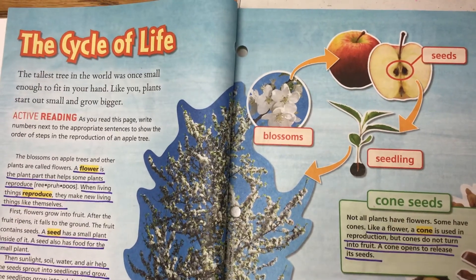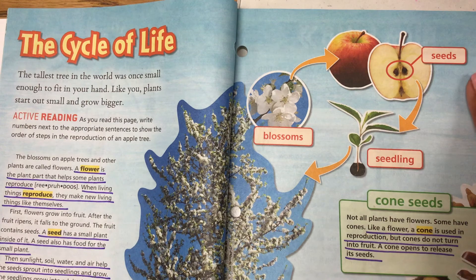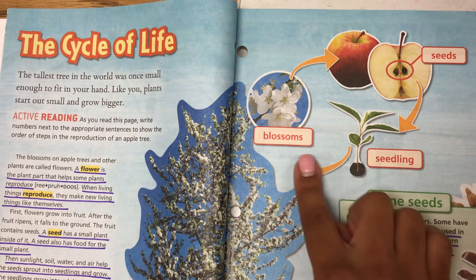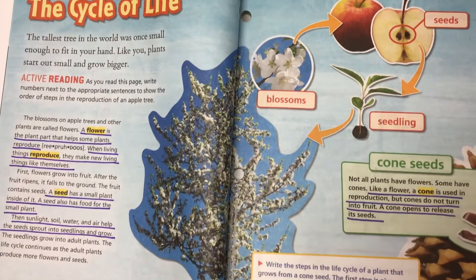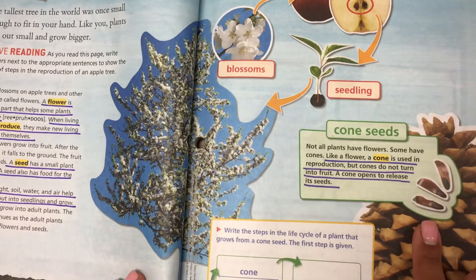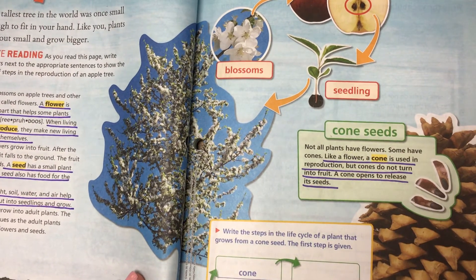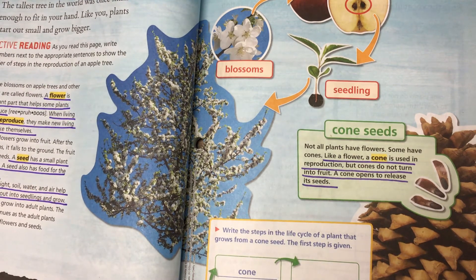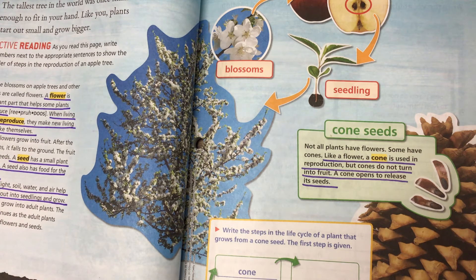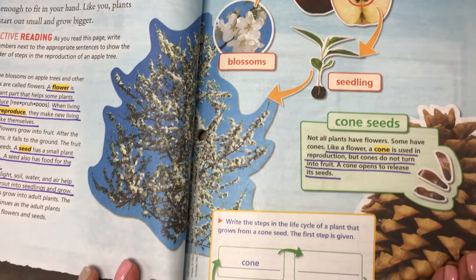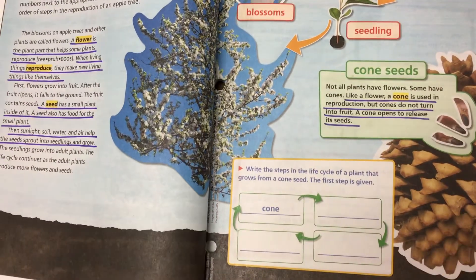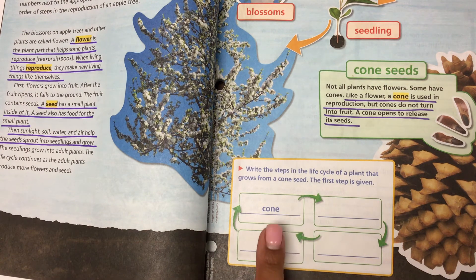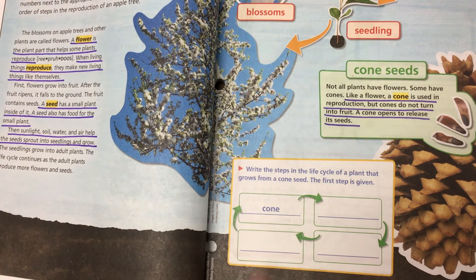Here you can see the seeds, seedlings, and then we have our blossoms. Take a look over here at cone seeds — not all plants have flowers, some have cones. Like a flower, a cone is used in reproduction, but cones do not turn into fruit; a cone opens to release its seeds. Write the steps in the life cycle of a plant that grows from a cone seed — the first step, cone, is given.